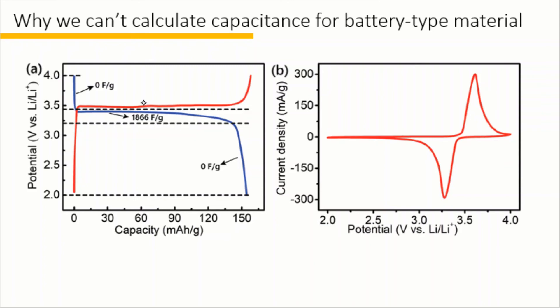Here is the GCD curve for a typical battery material, lithium iron phosphate. The slope of the GCD curve reflects the instantaneous capacitance. We can clearly divide the GCD curve into three regions. The first region, the capacitance is zero farads per gram. From 3.4 volts to 3 volts, the capacitance can be calculated to be 1866 farads per gram.